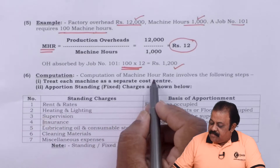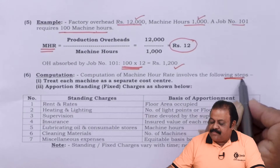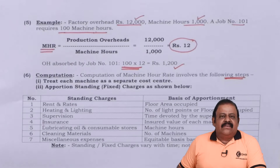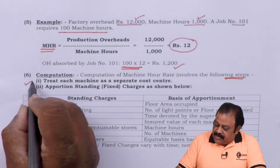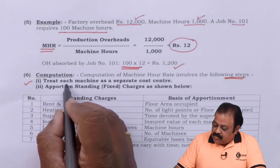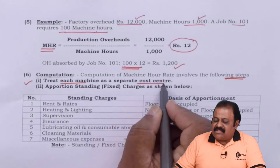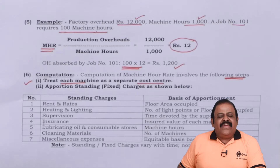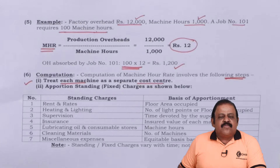Let us discuss how machine hour rate is calculated step-wise. The first step is to treat each machine as a separate cost center. If an organization has four to five machines, we need to calculate machine hours for each individual machine, as each machine requires a different type of expenses and cost. Therefore, each machine is considered as a separate cost center.